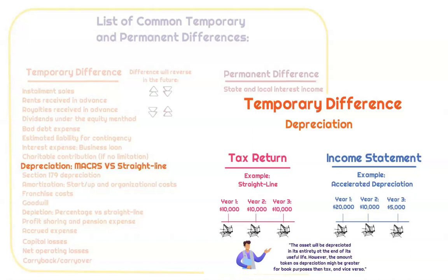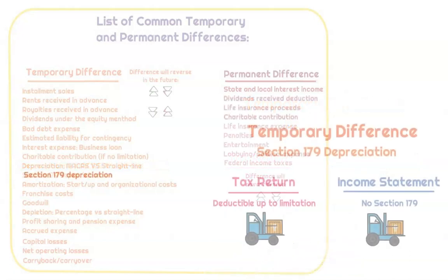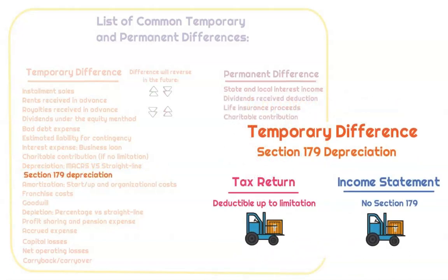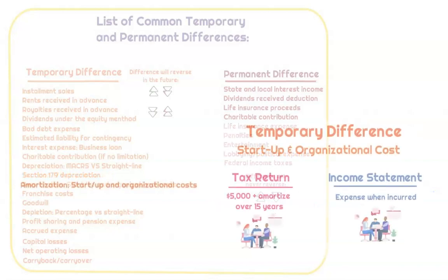Section 179 depreciation is going to be limited to just over a million dollars on the tax return, but we need to depreciate the asset on the financial statements. Amortization for startup and organizational costs: on the tax return, we take $5,000 off the first year, then amortize the remaining portion over 15 years. We can expense this in the financial statements, and eventually it's all going to be deducted and expensed, so that difference is temporary.